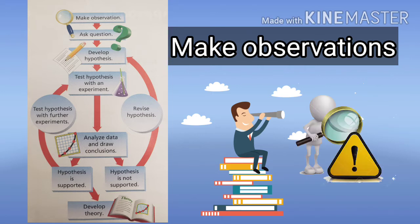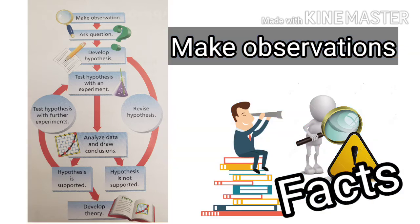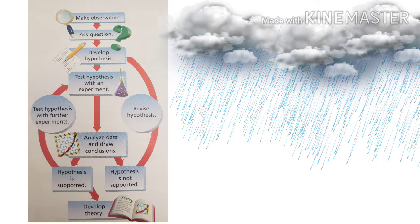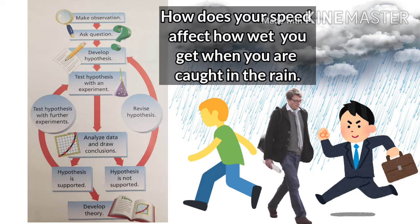The first step is making observations. Scientific investigations often begin with observations. An observation is information that you obtain through your senses. Repeatable observations are known as facts. For example, when you walk or run in the rain you get wet, and standing in the rain leaves you much wetter than walking or running. You might combine these observations into a question: how does your speed affect how wet you get when caught in the rain?